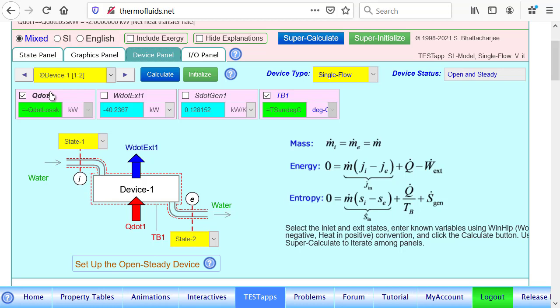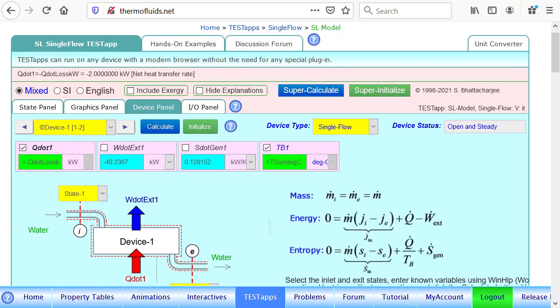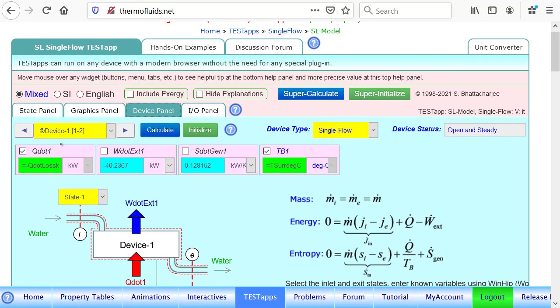Loss itself tells us the direction it is getting lost. So to enter that as q dot one, which must be abiding the sign convention, win is positive, heat in is positive. Heat is being lost, so it should be negative, two kilowatt. So again, if you put the pointer over, you can see the value picked up is minus two because I put the negative sign in front.